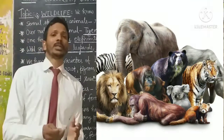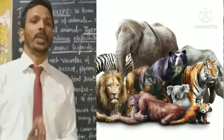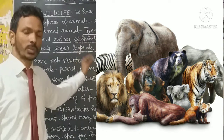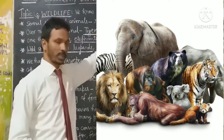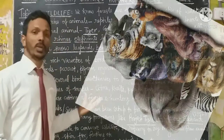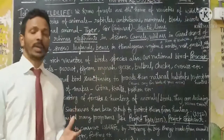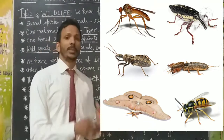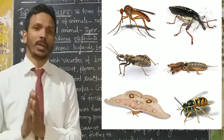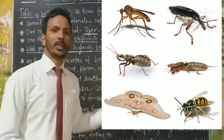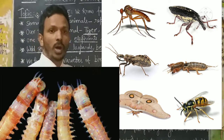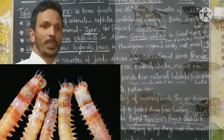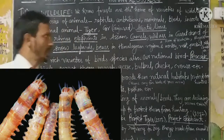Mammals are animals who bear young ones. In India we have several species of birds also. We also have insects and worms. These are the major categories of animal life found in India.